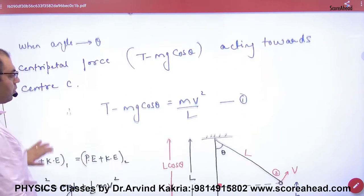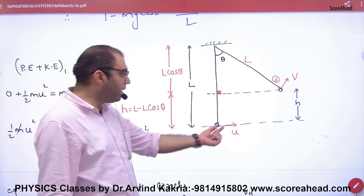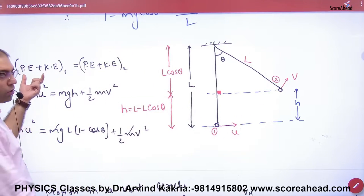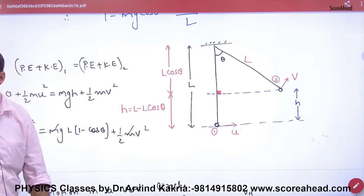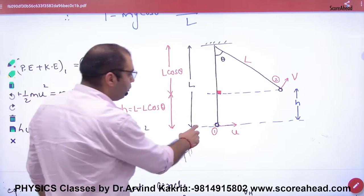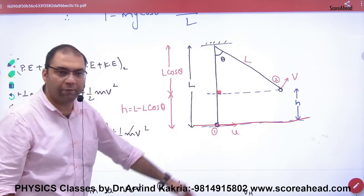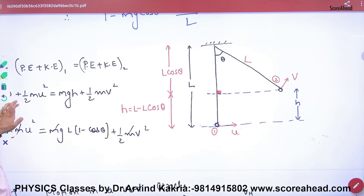At point one and point two, the sum of potential and kinetic energy remains the same. Ground means the lowest point. At point number one, the potential energy is zero.